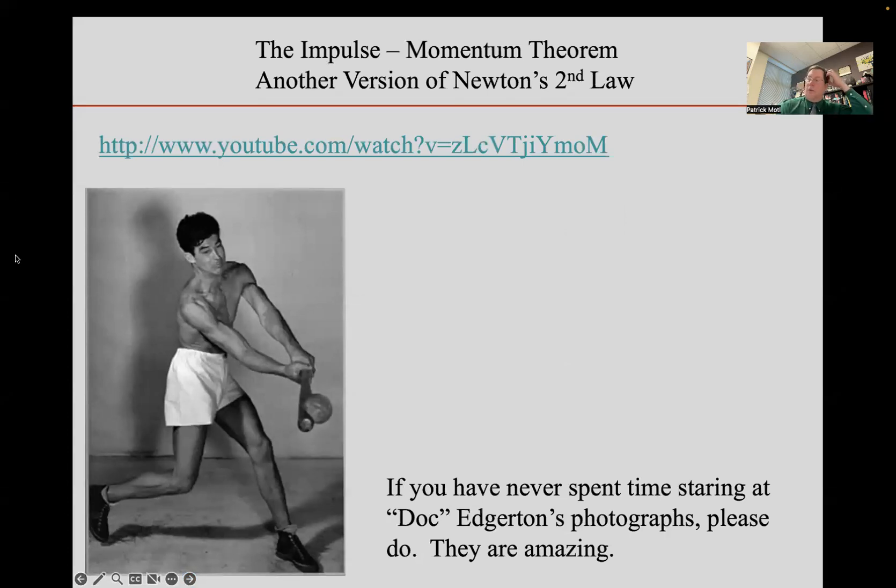That formulation is going to give us, after a little rearrangement, what is called the impulse momentum theorem. I want to try to set the stage for the impulse momentum theorem. So here's a stop motion photograph, one of Doc Edgerton's photographs of a softball being struck by a bat. So this is going to be our mental prototype for a collision, a sort of short time duration interaction in which the impulse momentum theorem is going to be valuable to us. So a little bit about how the picture was taken.